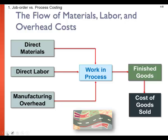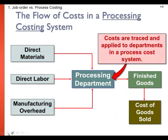Reviewing the basic flow of cost: we apply our three main product costs — direct materials, direct labor, and overhead — to work in process. When costs are entirely complete, we transfer those costs to finished goods. From finished goods, when the actual units are sold, we expense them into an account called cost of goods sold. In process costing, costs are traced and applied to departments specifically when those departments use direct labor, direct materials, and overhead.